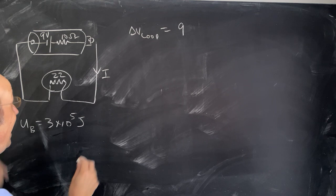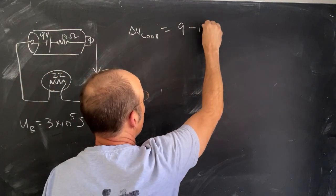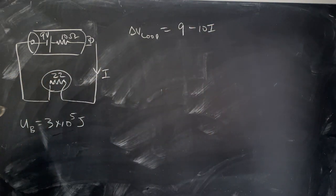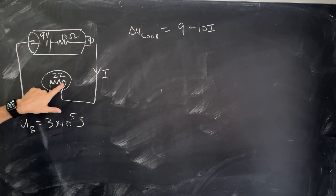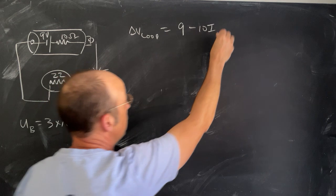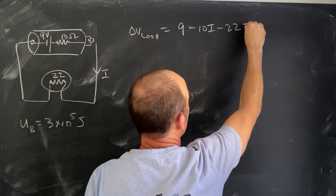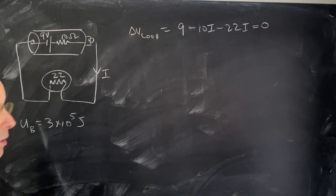Then I'm going to go in the same direction as the current, so right here I'm going to get a voltage drop of minus 10i. Now I'm going to come down here, still going the same direction as the current, I get minus 22i. And then I get back to where it was, so I have to be at zero volts.